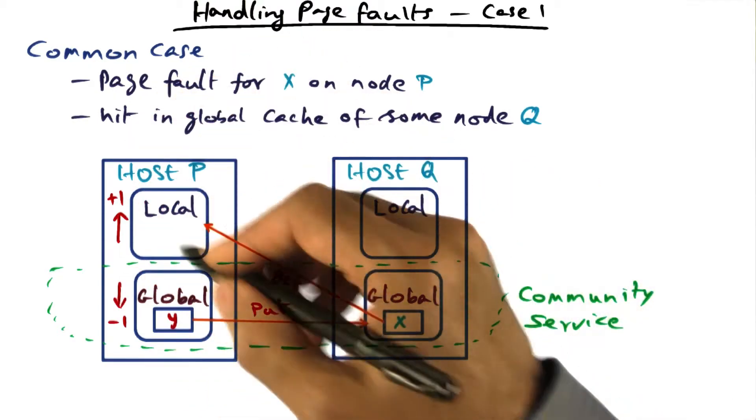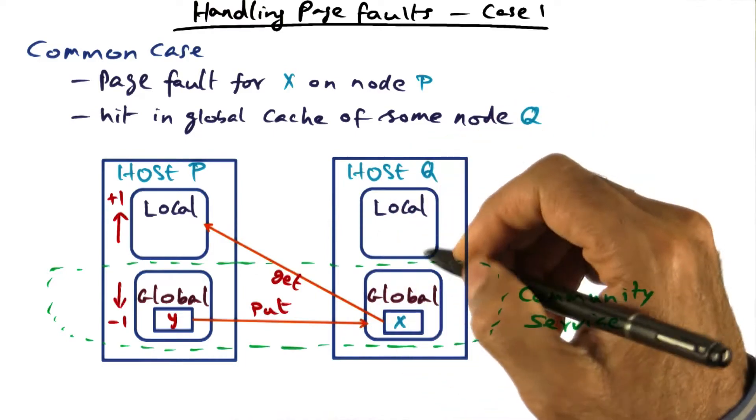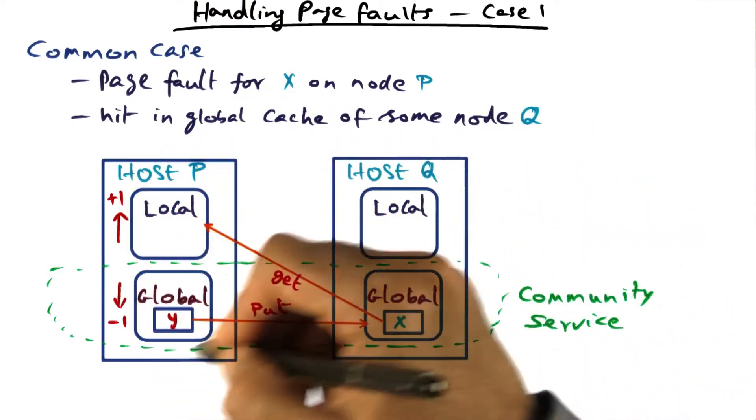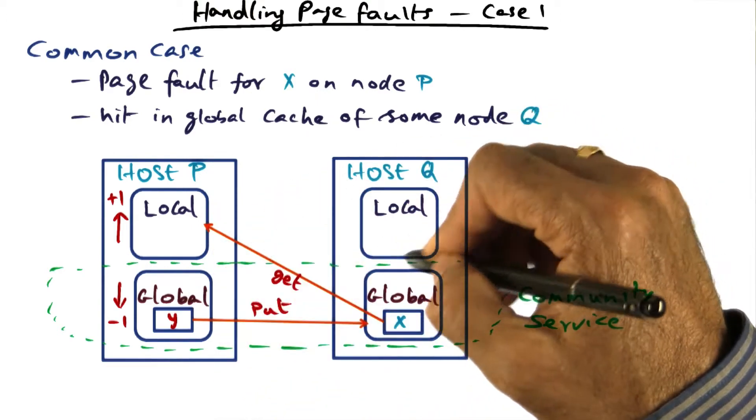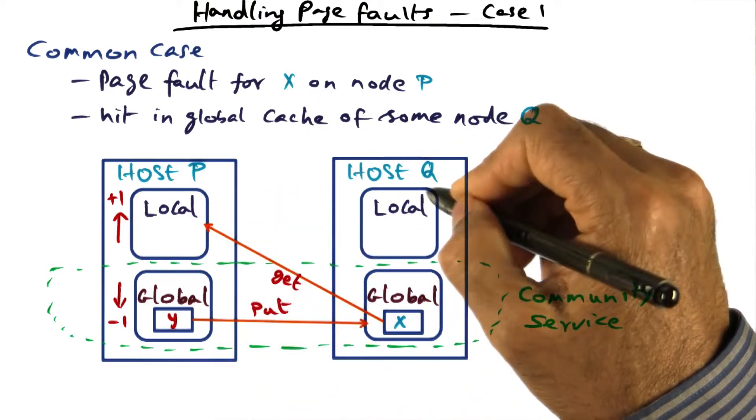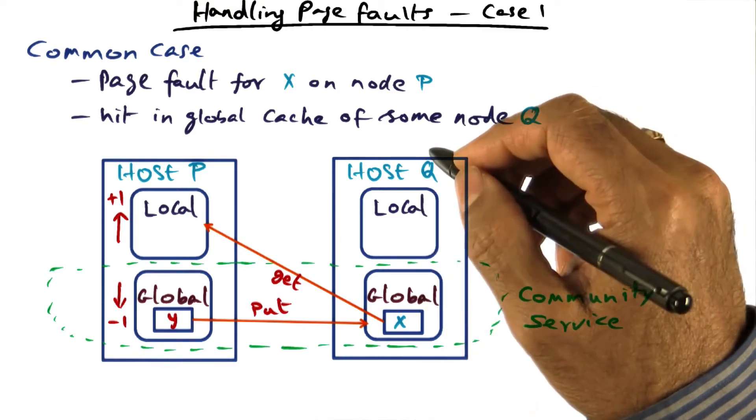In this picture I'm showing you two hosts, host P and host Q. And you can see that the physical memory on this host is divided into the local part and the global part. Similarly, the physical memory on host Q is divided into the local part and the global part.